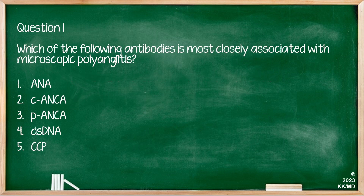Let's do some questions. Question one: which of the following antibodies is most closely associated with microscopic polyangiitis? One, ANA; two, C-ANCA; three, P-ANCA; four, dsDNA; five, CCP. The correct answer is P-ANCA, which is positive in about 70% of cases with microscopic polyangiitis.